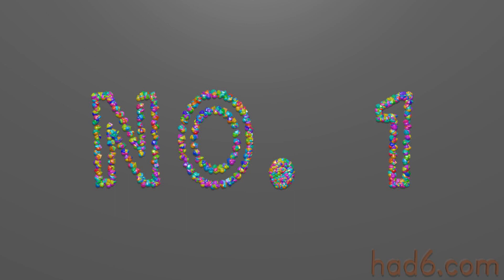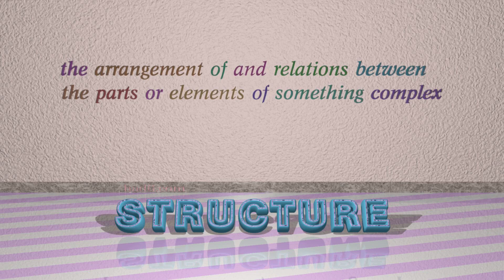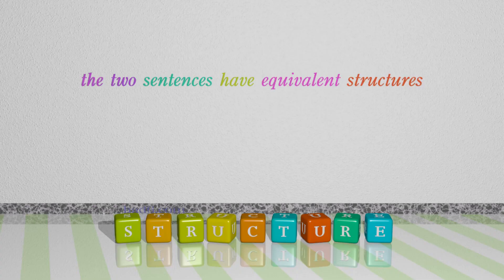Number 1: Structure. Which means the arrangement of and relations between the parts or elements of something complex. For example: The two sentences have equivalent structures.